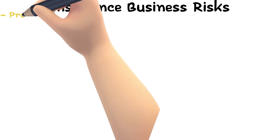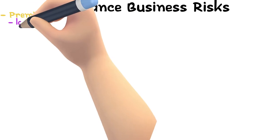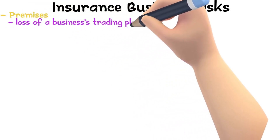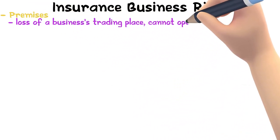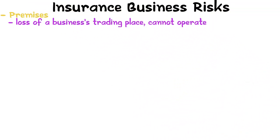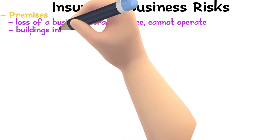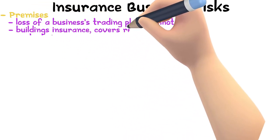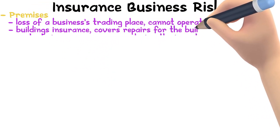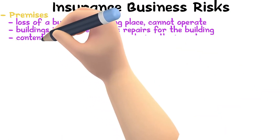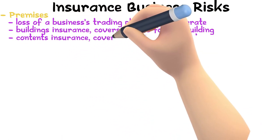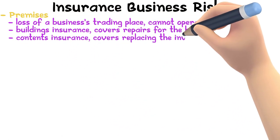Premises. Loss of a business's trading place would mean that the business cannot operate. Due to this, most businesses take out premises insurance. A building's insurance covers repairs to the building itself, and contents insurance covers the replacing of any inventory.